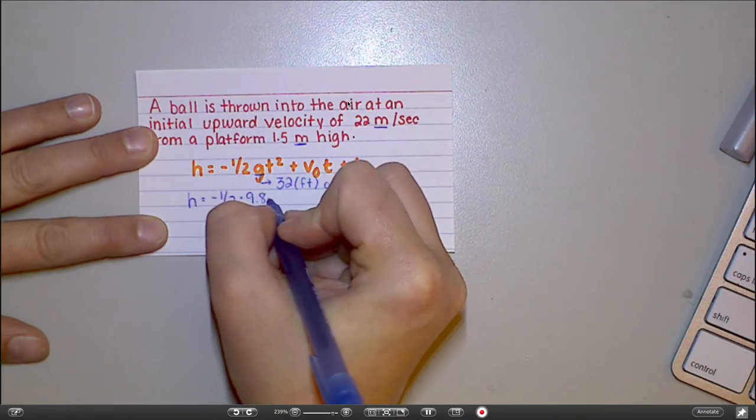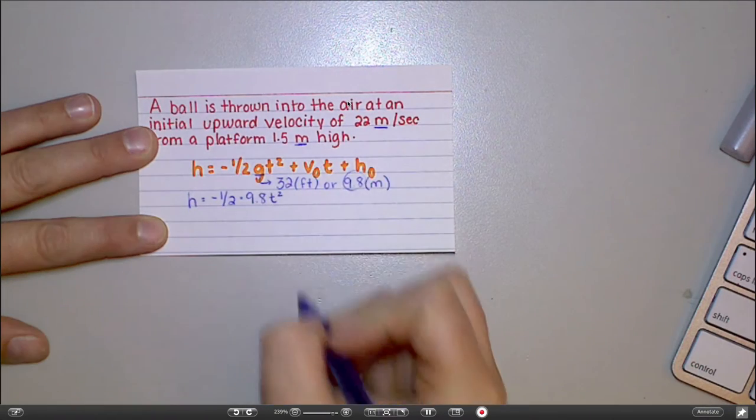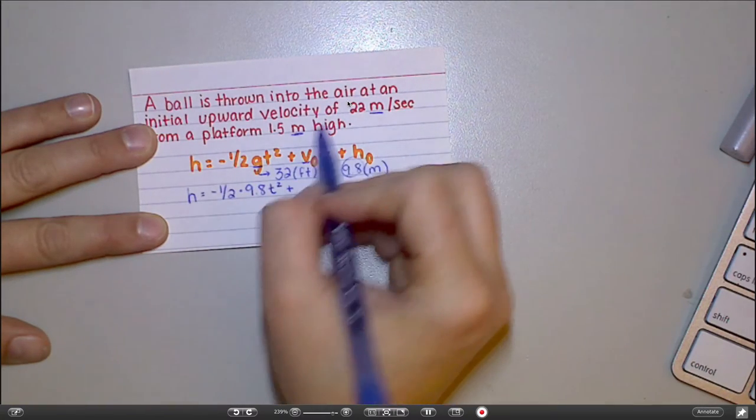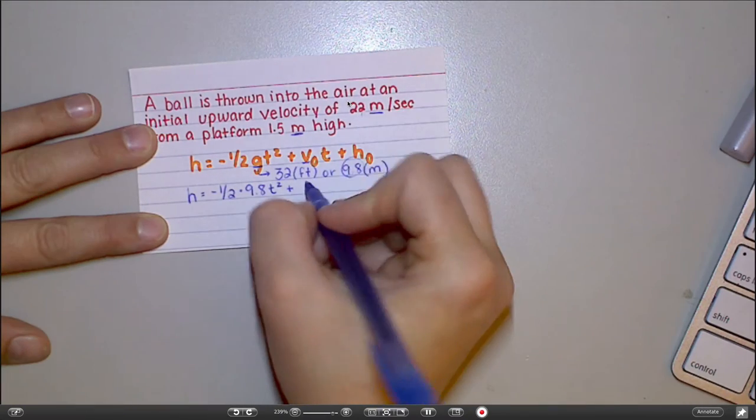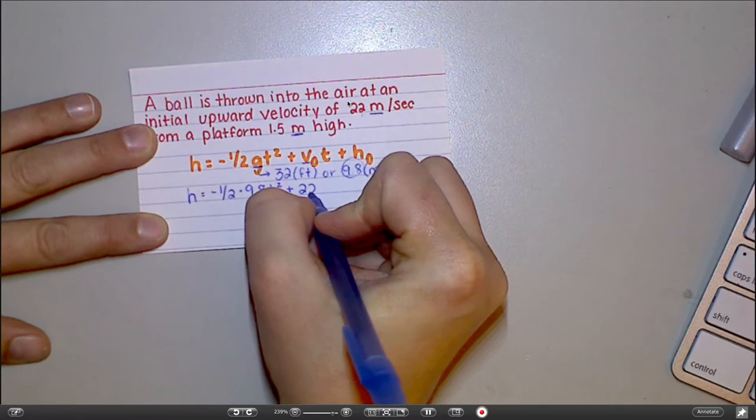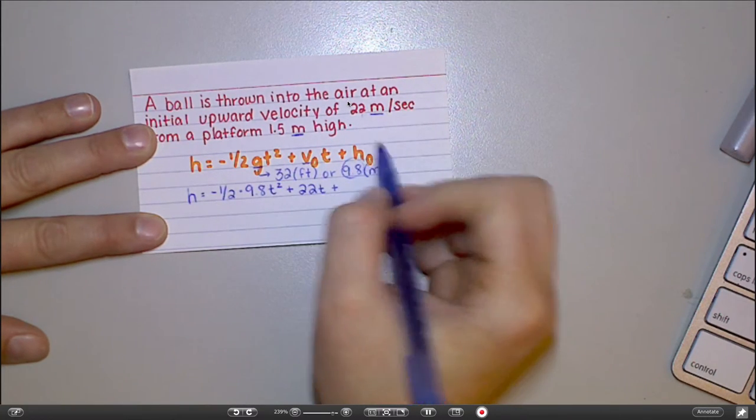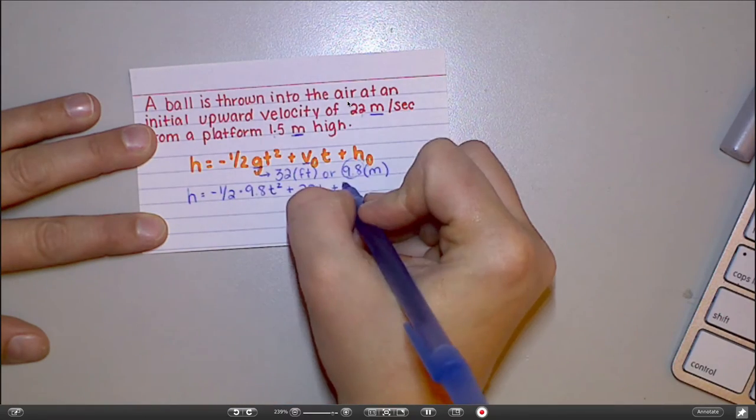And the t is like your x. So that's just going to stay a t. Plus my velocity is 22 meters per second. So I would say 22t plus that h sub zero on the end. That's how high you're starting from. So I'm starting at 1.5.